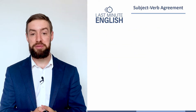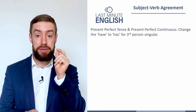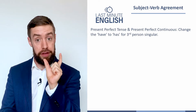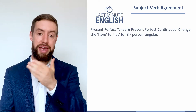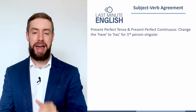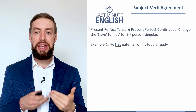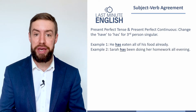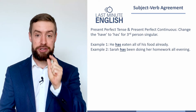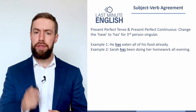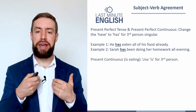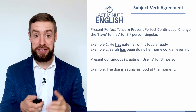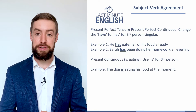Another rule: in the present perfect tense or present perfect continuous tense with the third person singular — he, she, it, or someone's name — we change 'have' into 'has.' For example: 'he has eaten all of his food already,' or 'Sarah has been doing her homework all evening.' And in the present continuous tense, we change 'am' to 'is' — for example, 'the dog is eating his food at the moment.'